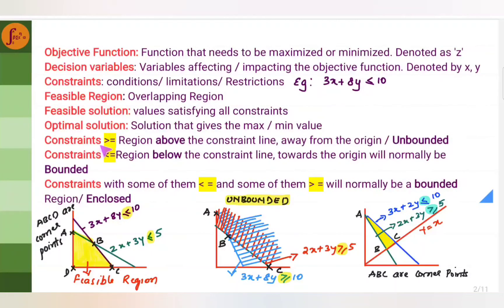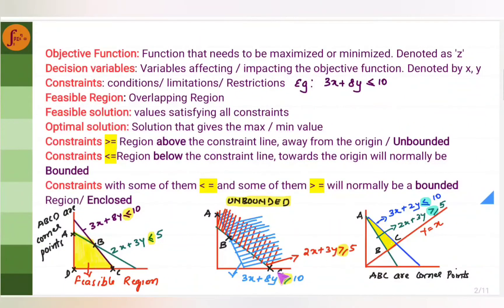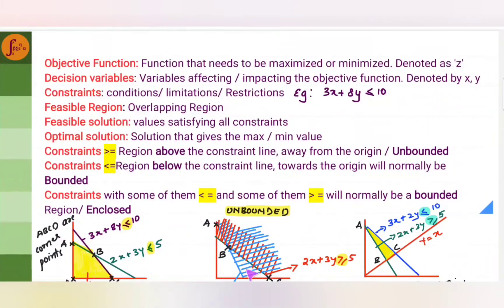When constraints are greater than or equal to, the shading is going to be above the constraint line, or away from the origin. Here, both constraints have greater than or equal to, so the shading is above the line, away from the origin. This becomes an unbounded region because the region is not confined — it is not enclosed.